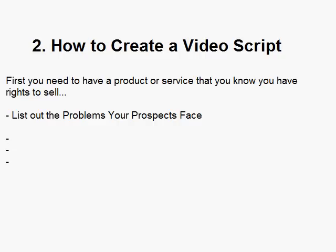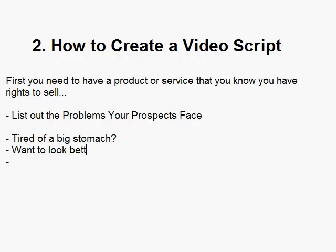For example, if I'm selling a health and fitness product about losing fat off your abs — selling an ebook or video on how to lose belly fat and get abs in a certain number of days — the problems your prospect faces might be things like being tired of having a big stomach, or wanting abs because they want to look better for summertime on the beach. You could say 'tired of big stomach' or 'want to look better for the summer.' You want at least two problems listed out.